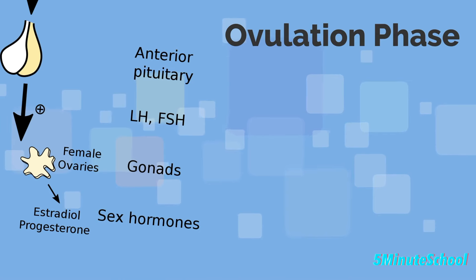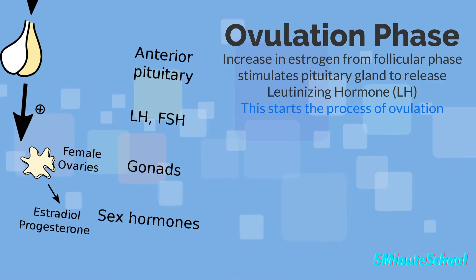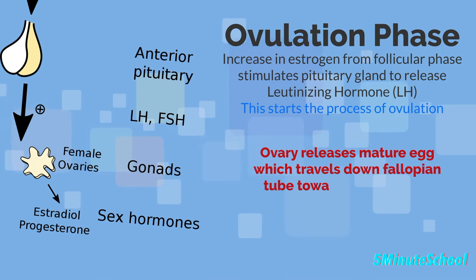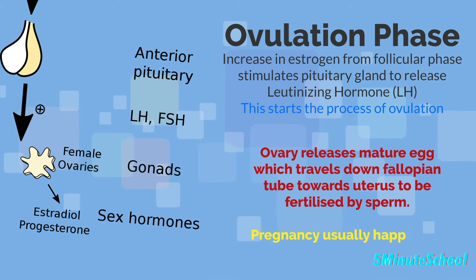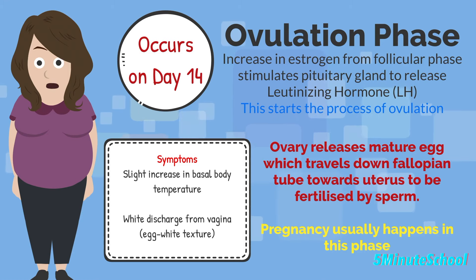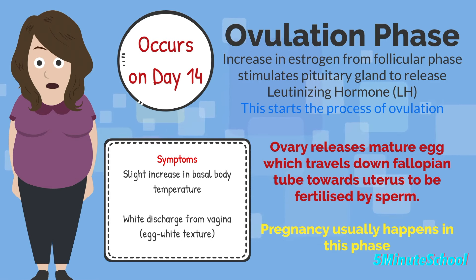The next phase is the ovulation phase. The increase in estrogen during the follicular phase triggers the pituitary gland to release luteinizing hormone, which starts the process of ovulation. Ovulation is where the ovary releases a mature egg that travels down the fallopian tube towards the uterus to be fertilized by sperm — this is when pregnancy usually occurs. Symptoms of the ovulation phase include a slight increase in body temperature and a thicker white discharge from the vagina, sometimes described as the texture of egg whites. Ovulation usually happens around day 14 of the menstrual cycle.